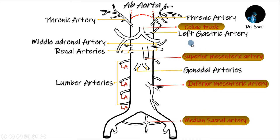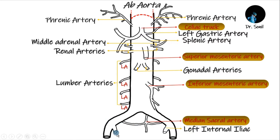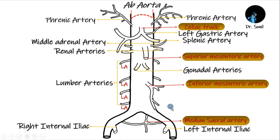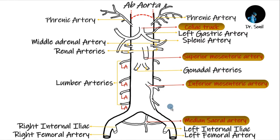We also have the left gastric artery, part of the celiac trunk, and also the splenic artery. Common iliac arteries, starting from L4, branch to supply blood to the lower limbs and the pelvis, ending the abdominal aorta. We have two common iliac arteries — left internal iliac and right internal iliac arteries — and also left femoral artery and right femoral artery.